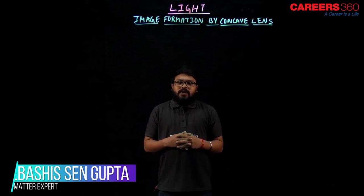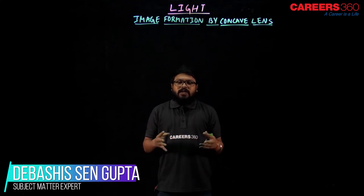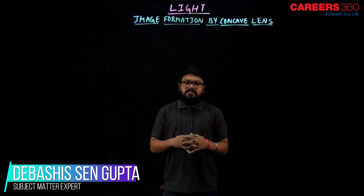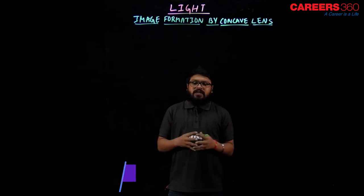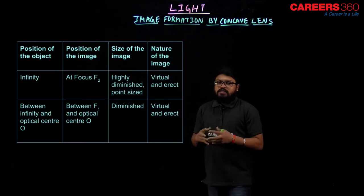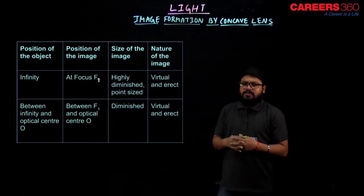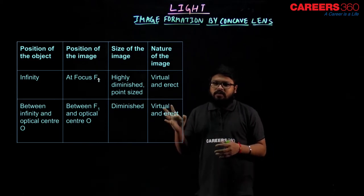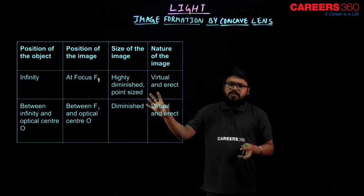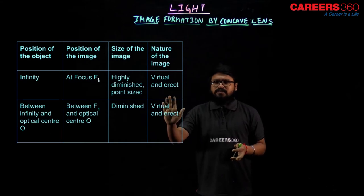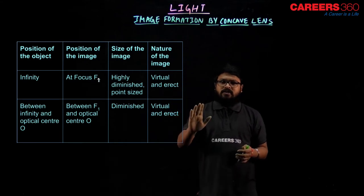Hello everyone. In today's lecture we are going to discuss about the image formation by concave lens. Let us see one table first over here. The table is comprised of 4 columns: position of the object, position of the image, size of the image, and nature of the image.